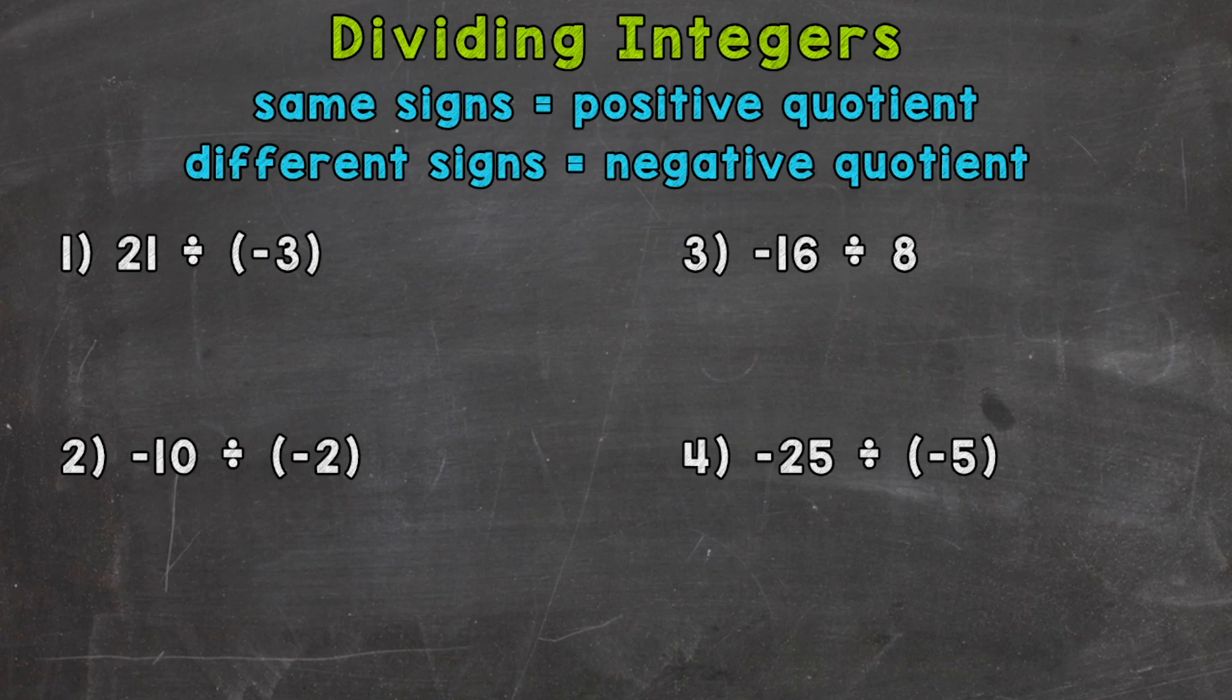We're going to be incorporating both negative and positive integers in the four examples that we're going to go through together. So let's jump right into number one, where we have 21 divided by negative 3. Now, at the top of the screen, we have some very important information about how to solve these.